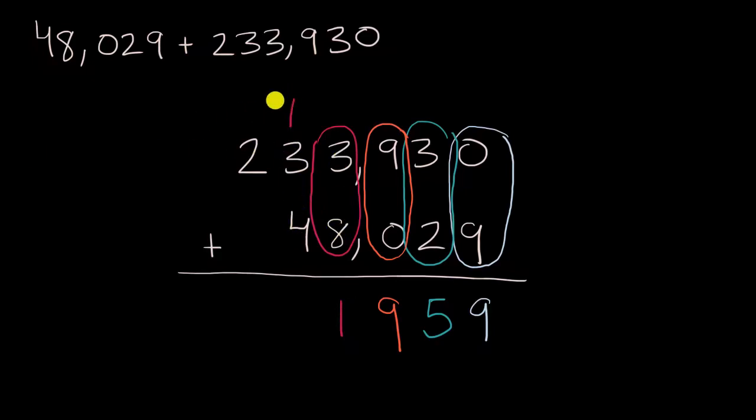And now, so we have one 10,000 plus three 10,000s plus four 10,000s. So one plus three plus four, that's eight 10,000s, or 80,000.